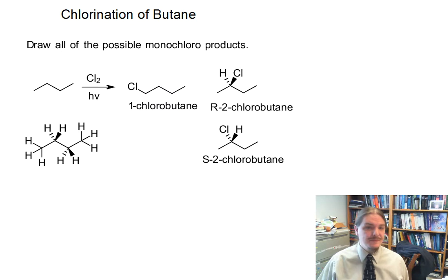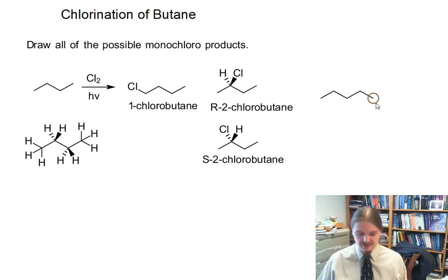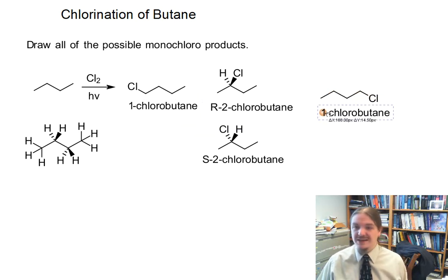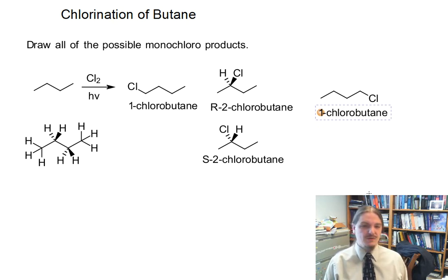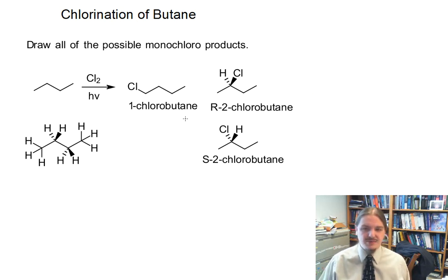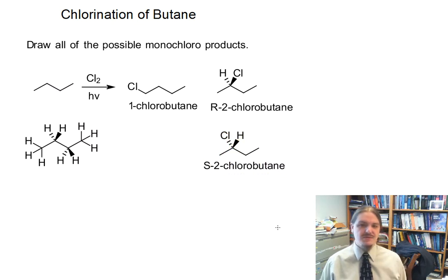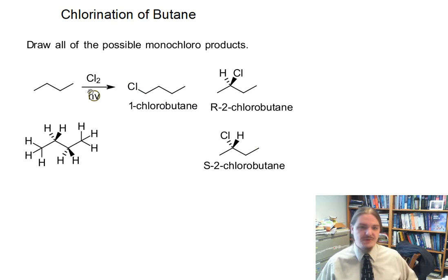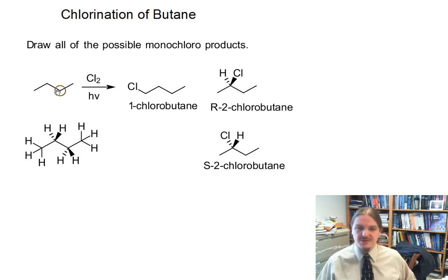Getting rid of those, if we substitute at position four, there are three hydrogens there and they are all chemically equivalent, so I'm only going to draw one of those products — but that product is actually something we already have: 1-chlorobutane. So there are in fact only three possible compounds. If we don't count stereochemistry, there are only two constitutional isomers: 1-chlorobutane and 2-chlorobutane from the one and two spots. This molecule is symmetric, so whatever happens at two, you get the same outcome at three; whatever happens at four, you get the same outcome as at one.